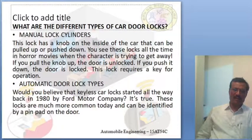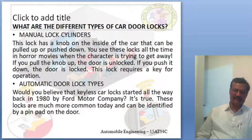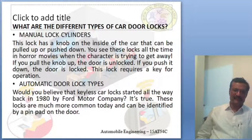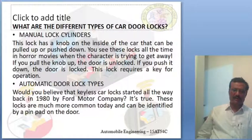There are many different types of car door locking systems used worldwide today. Two types commonly used are the manual lock cylinder and the automatic car lock cylinder. The manual lock cylinder has a knob on the inside of the car that can be pulled up or pushed down. If the knob is pulled up, the door is unlocked; if pushed down, the door is locked. This lock requires a key for operation.